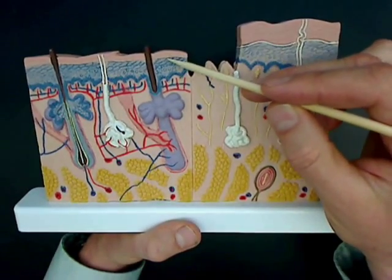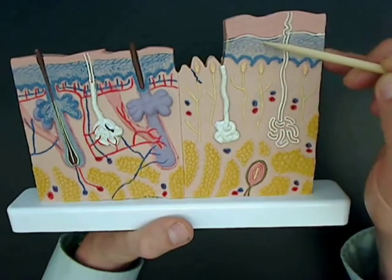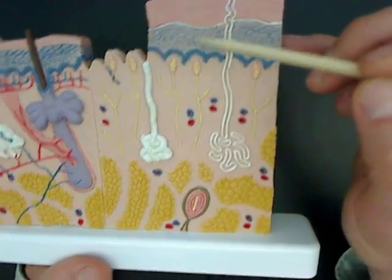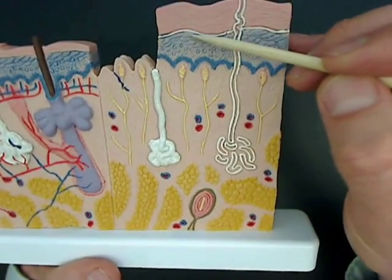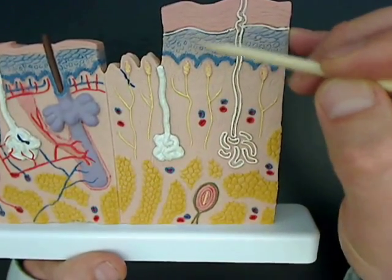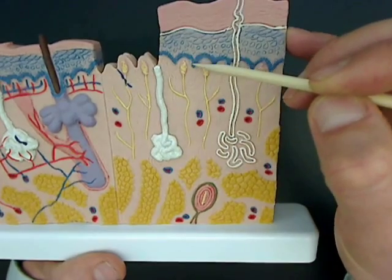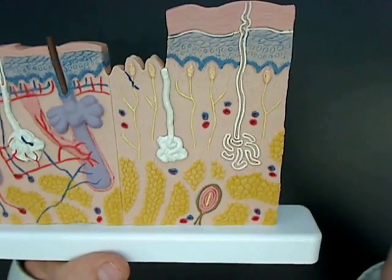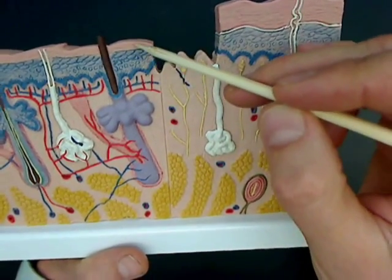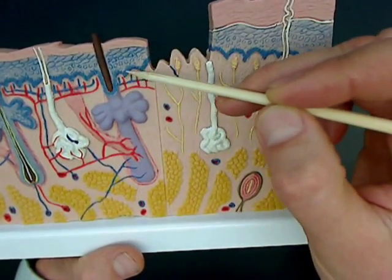Stratum lucidum is only seen on thick skin — no stratum lucidum on the thin skin. Underneath the stratum lucidum we have stratum granulosum. This model is actually trying to show the individual cells, but it's not showing the granularity, so make sure you pay attention to the histology. Between stratum granulosum and stratum basale is stratum spinosum, and then at the bottom we have stratum basale. On the thin skin: stratum corneum, stratum granulosum, stratum spinosum, stratum basale.